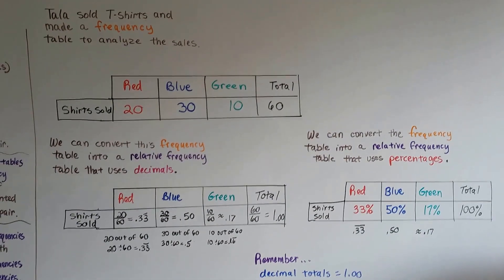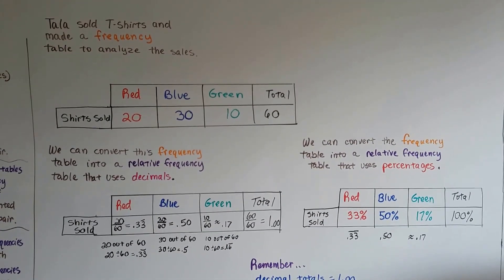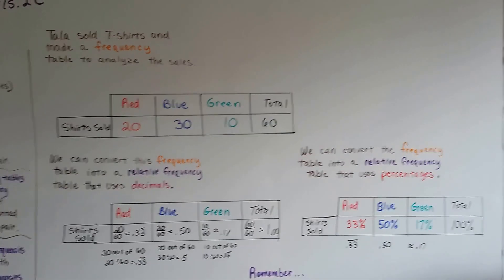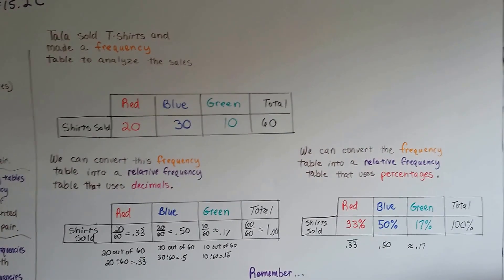We're going to talk about making a two-way relative frequency table in the next video. 15.2d. I hope I'll see you there. Bye.